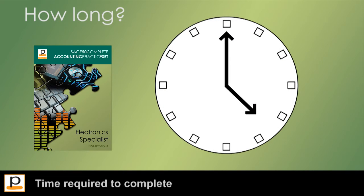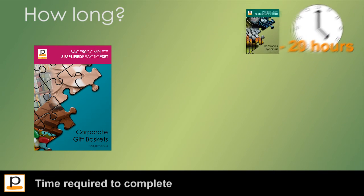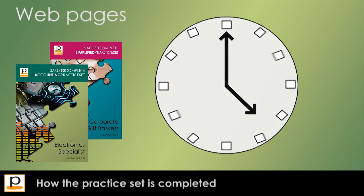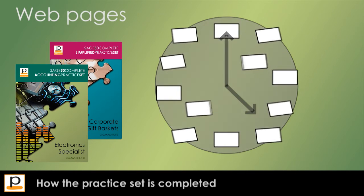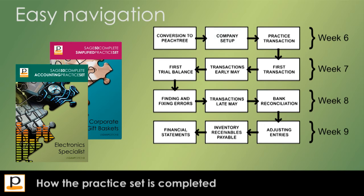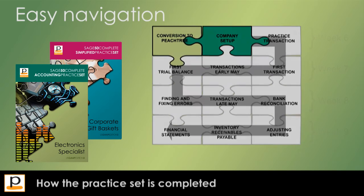The electronic specialist practice set can take between 12 and 20 hours for students to finish. The corporate gift baskets practice set is about half this time. Both sets are completed across a number of pages, generally over a period of weeks throughout the semester. A navigation map is provided on each page so students know where they are up to and how many study hours are likely to remain.